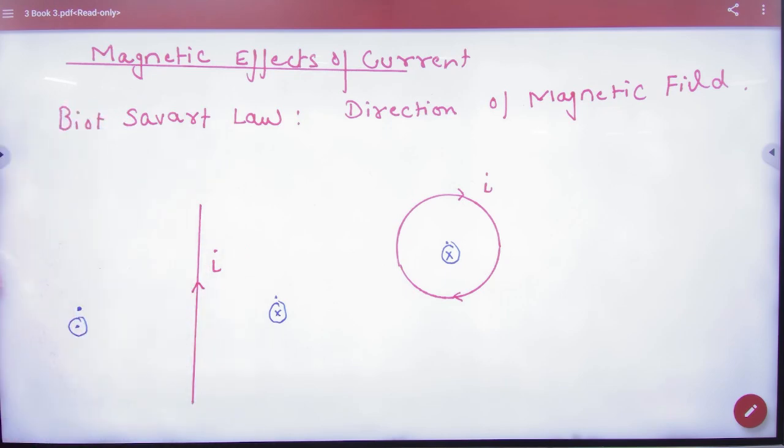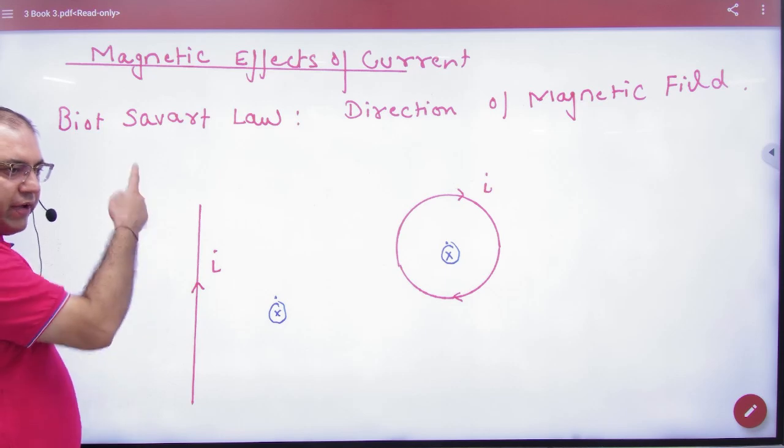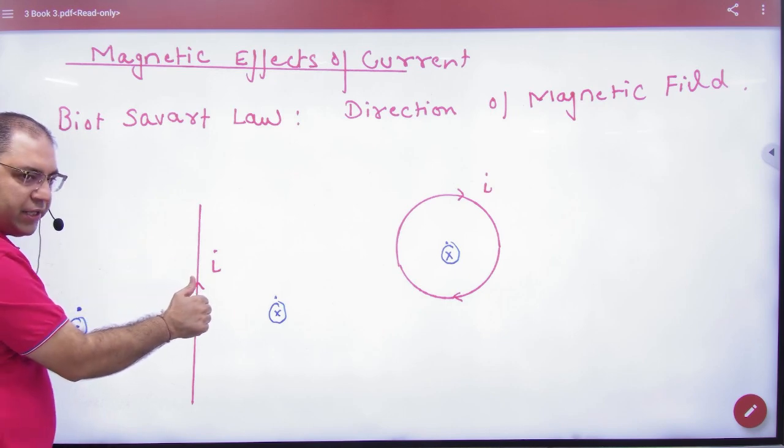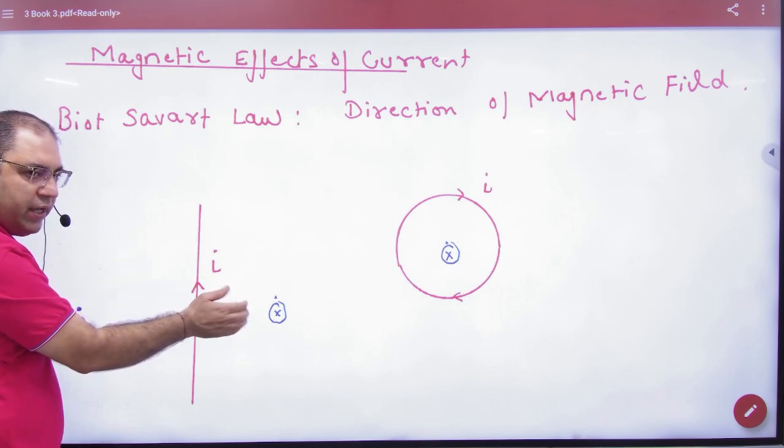We did this: If there is current in a straight wire and I ask you what is the direction of B, then you take the thumb with current. And how is the B vector on the board? Inside.